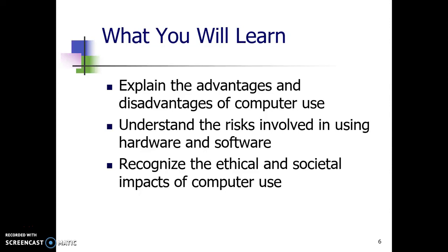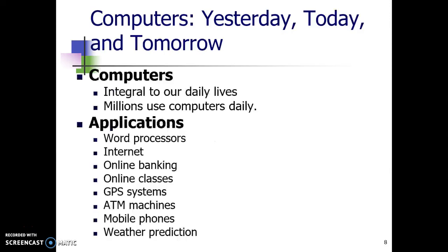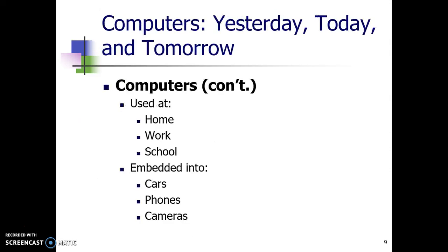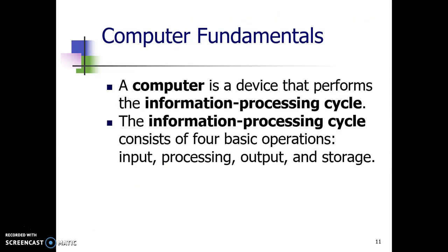The process of processing information is in a cycle that we call the information processing cycle. This information processing cycle has four processes or four steps, or we can say four basic operations: input, processing, output, and storage.